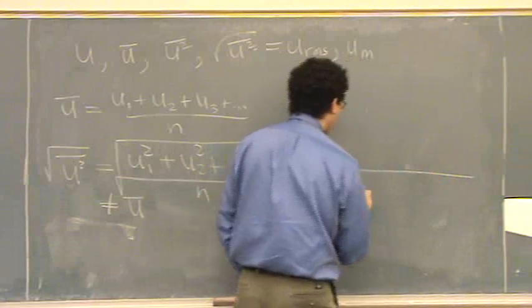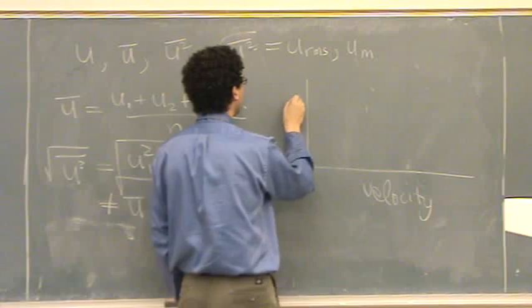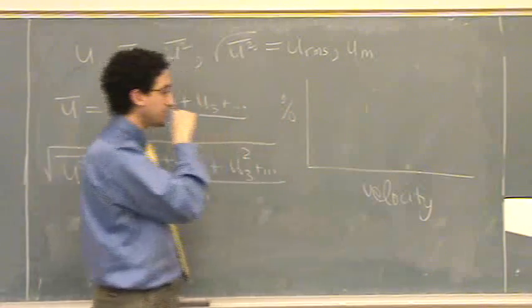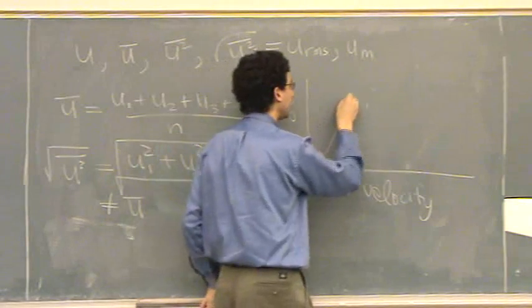Now, if I was going to graph velocity versus percentage of molecules having that velocity, say in this room, it will look something like this.